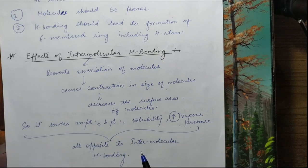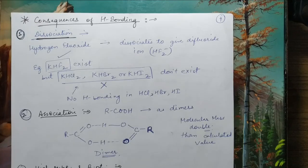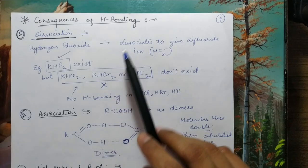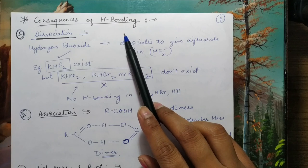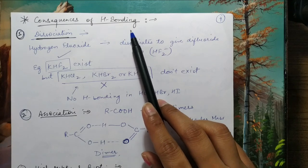In contrast, if intermolecular hydrogen bonding occurs, melting point, boiling point, and solubility all increase, while vapor pressure decreases — because the more molecules associate, the more energy is needed to break those bonds and convert them to vapor. So for intramolecular hydrogen bonding, all these properties are reduced (vapor pressure being the exception, which increases), while for intermolecular hydrogen bonding, all properties show the opposite trend.